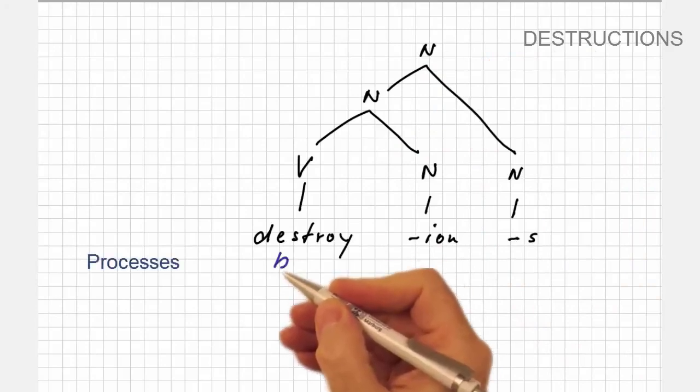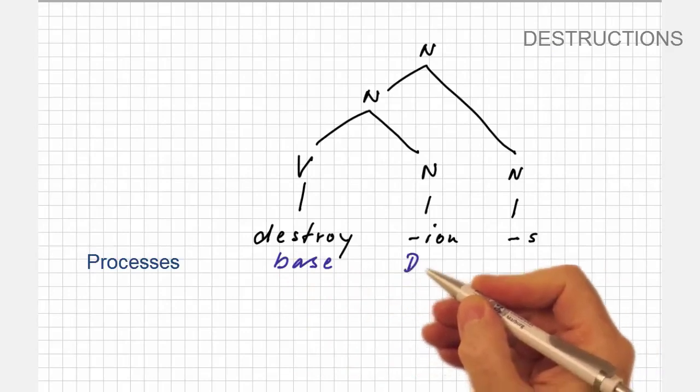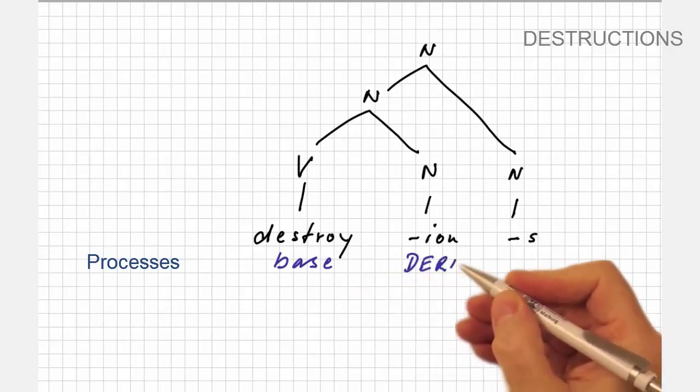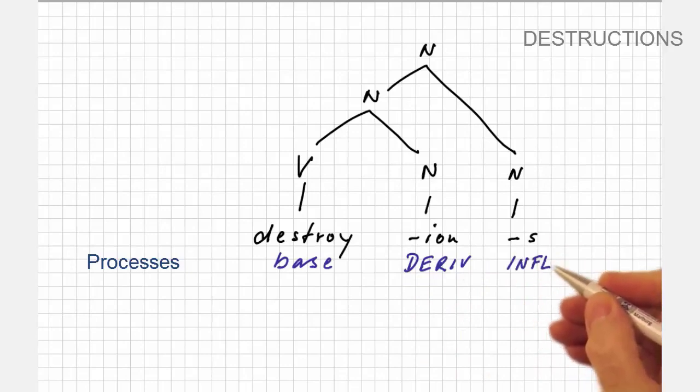The definition of the morphological processes is simple. Destroy is the base, the attachment of ion a derivational process, and the plural s is a case of inflection.